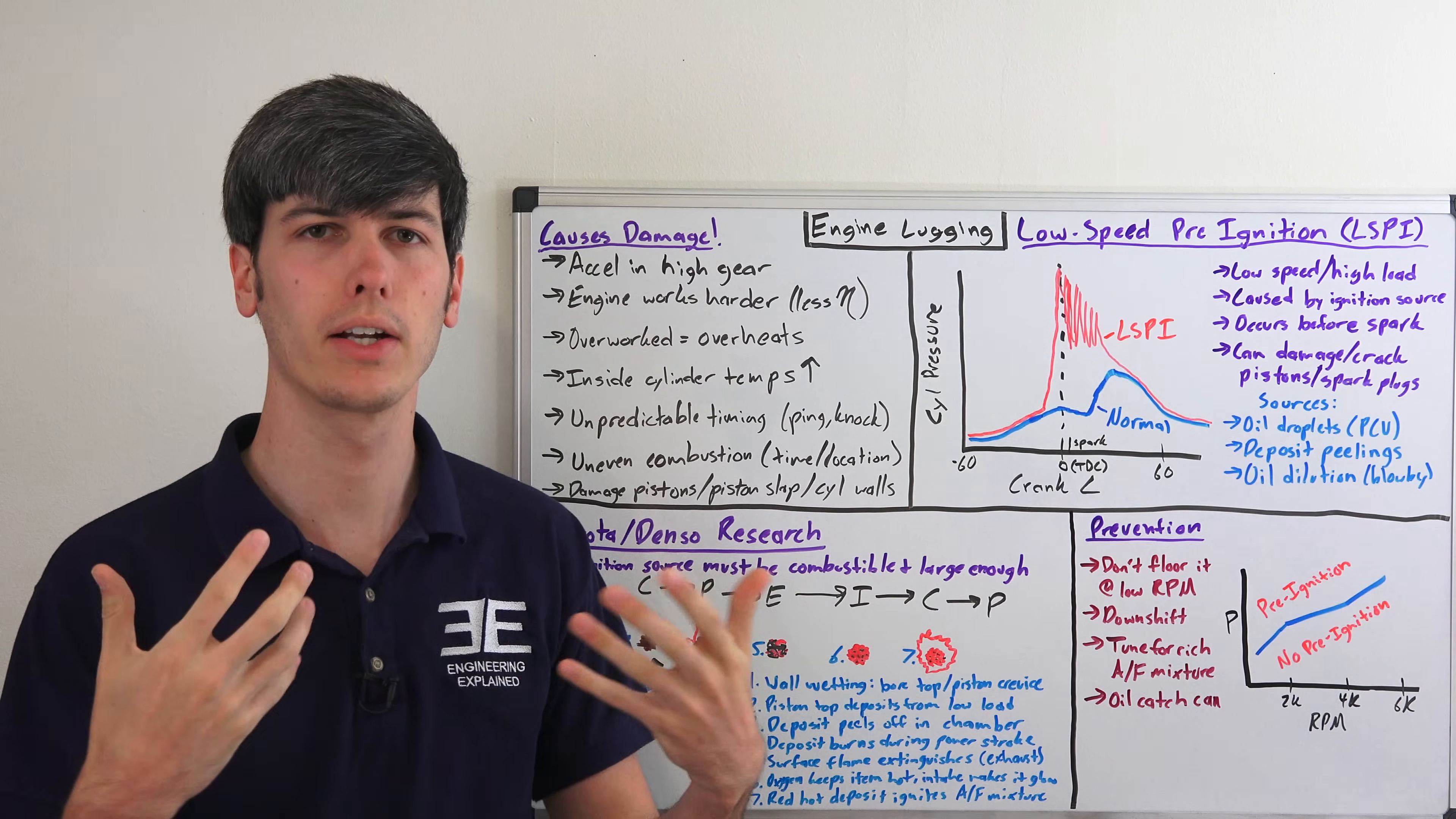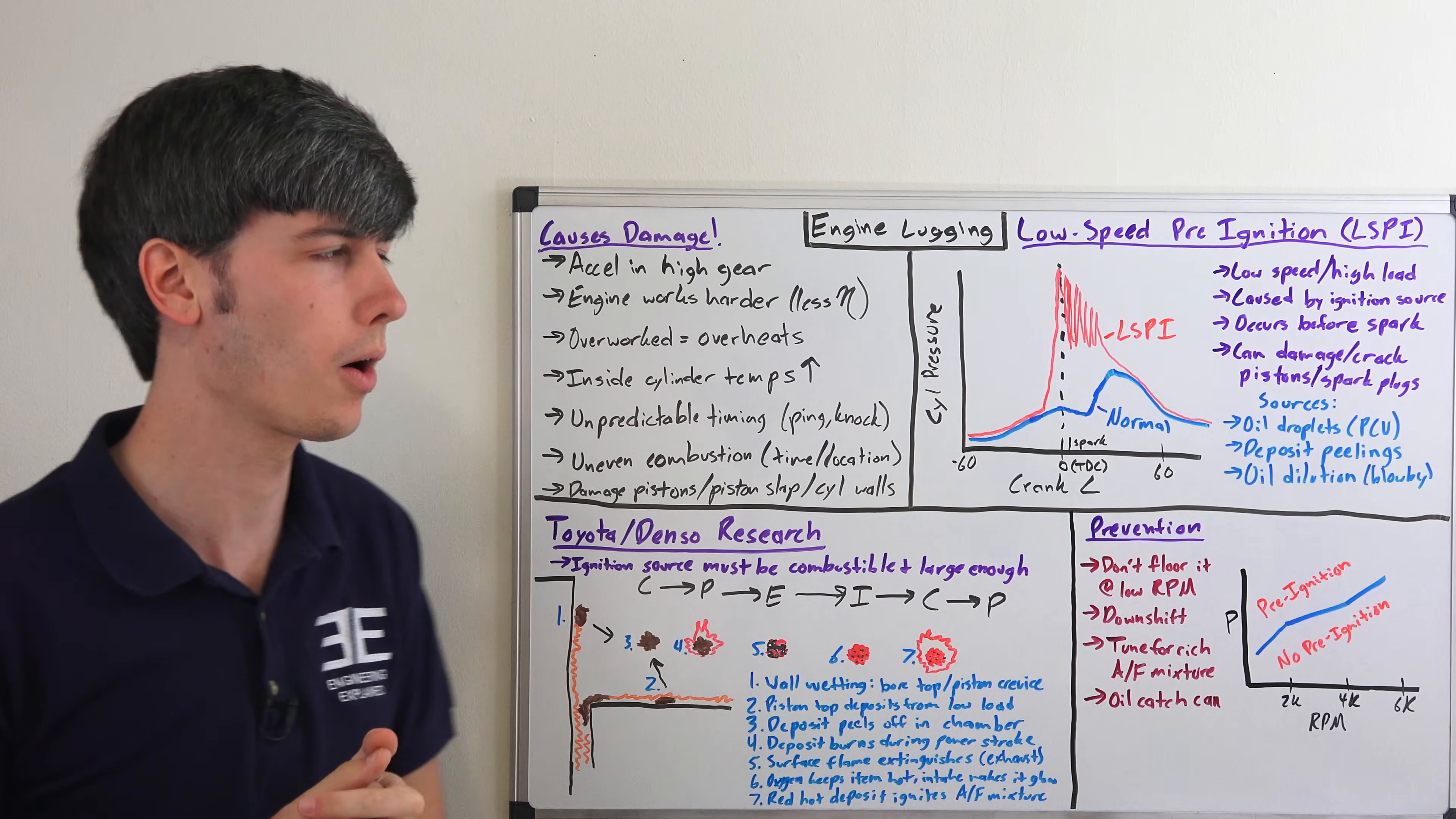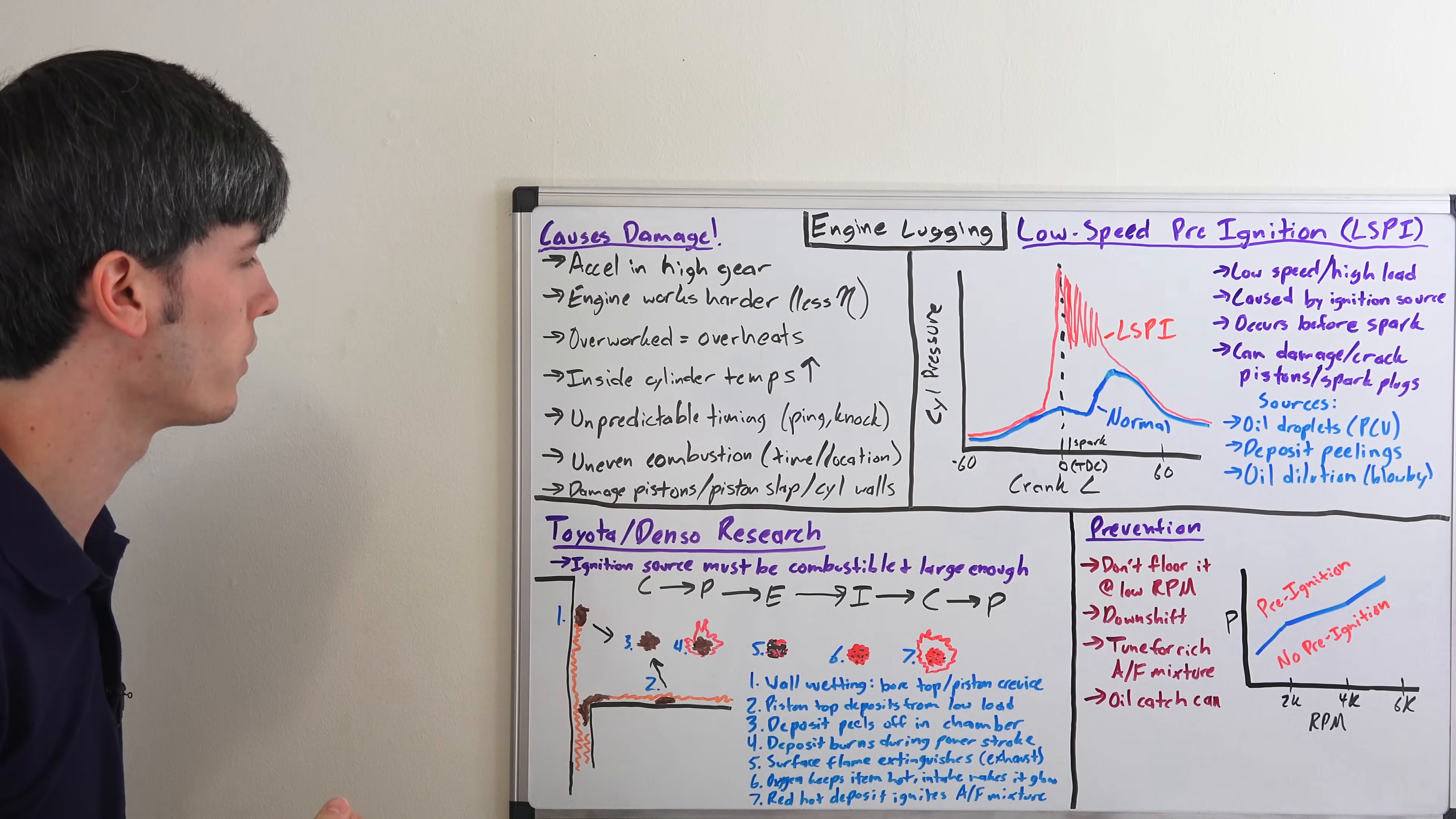By lugging your engine I mean putting your engine at a very high load, for example flooring it, when it's at a low engine RPM, such as about 1500 RPM. So let's say you're in fifth or sixth gear, you're only cruising at about 40 miles an hour and you floor it - this is going to lug your engine.